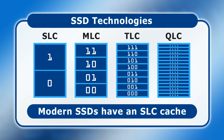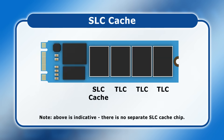This means that the SSD has some flash memory cells configured to store just one bit of data, which can be written to far more quickly. So the SSD's controller initially writes incoming data to its SLC cells, before migrating it to slower TLC or QLC in idle periods.